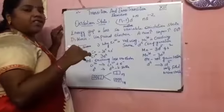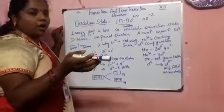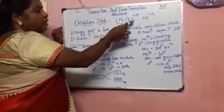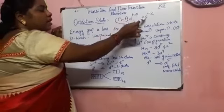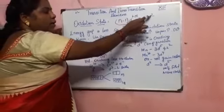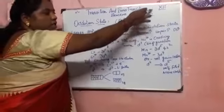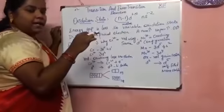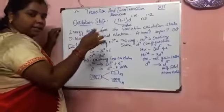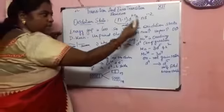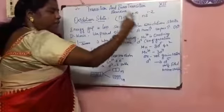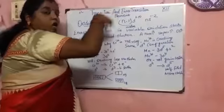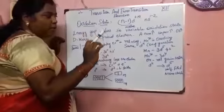Usually the electronic configuration of a D-block element is (n-1)d¹⁻¹⁰ns¹⁻². This is the outermost electron and it is called the penultimate electron. That means before the S orbital, the D orbital is filled.